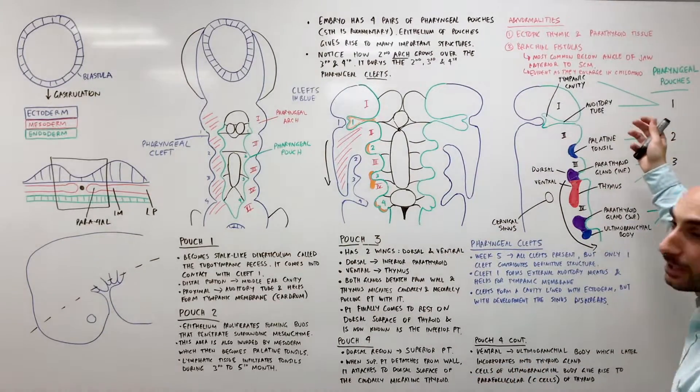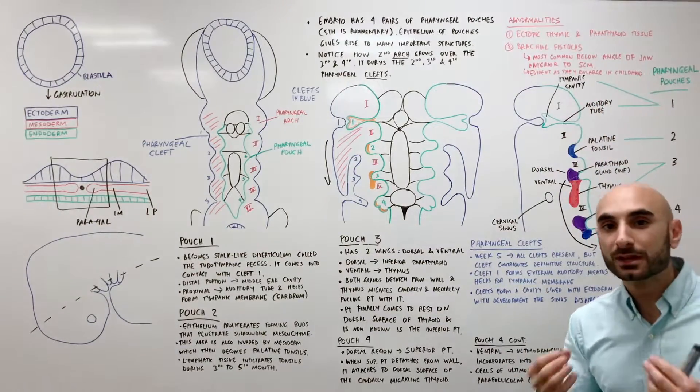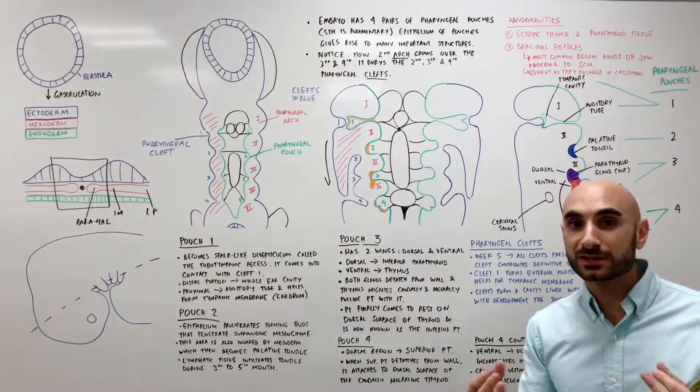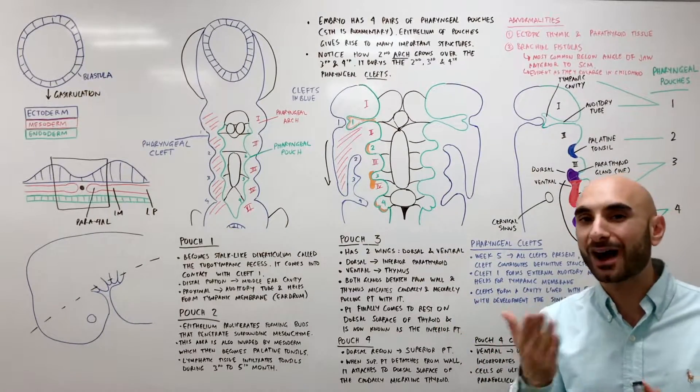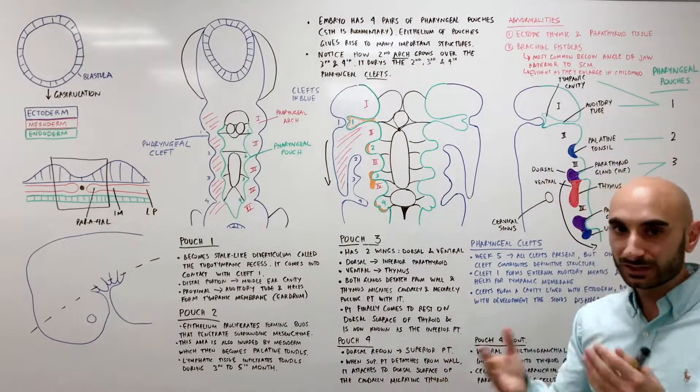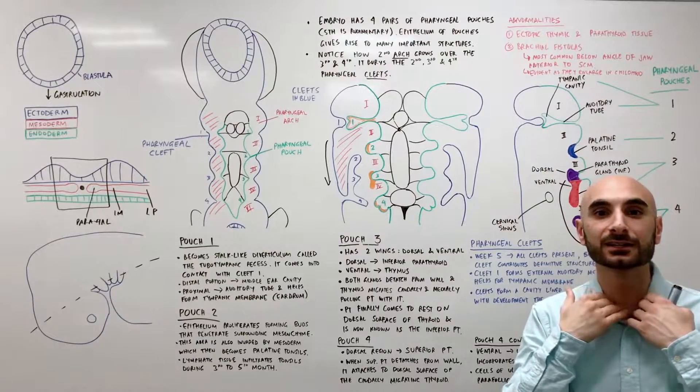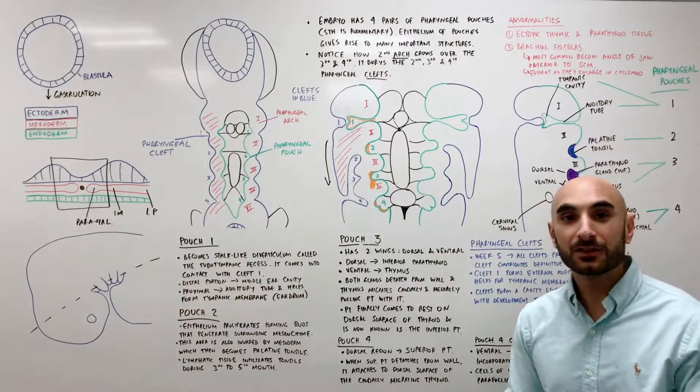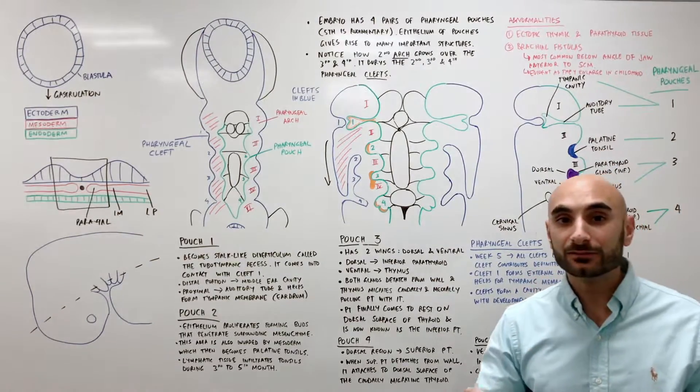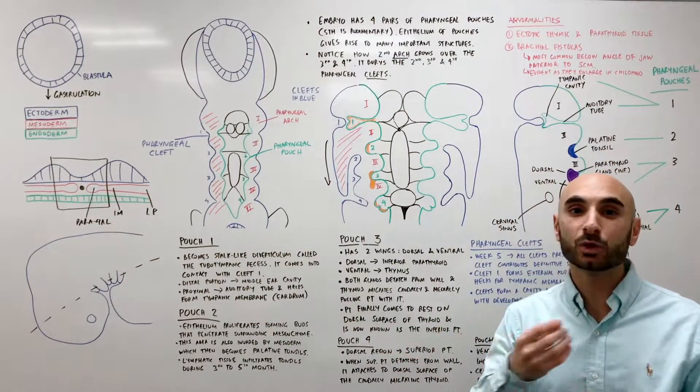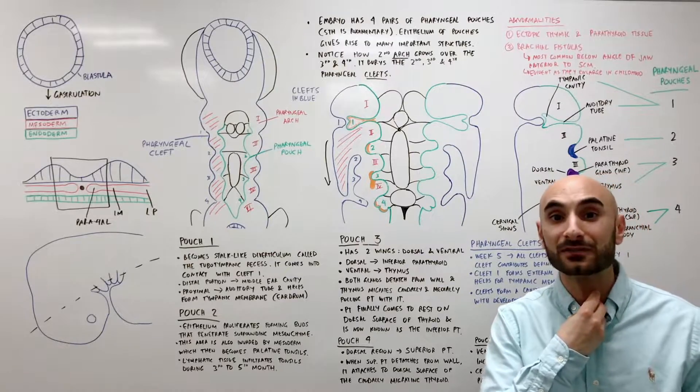Where the parathyroid tissue doesn't actually join the dorsal surface or behind the thyroid. It could join anywhere from the top of your neck all the way down. It's very variable. Thymic tissue can also be very variable. Its tail could also remain attached to a bit of the thyroid.